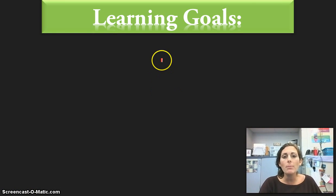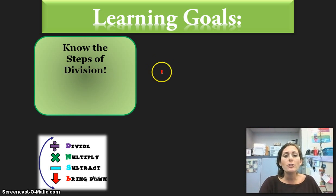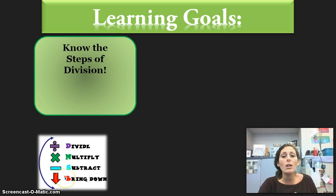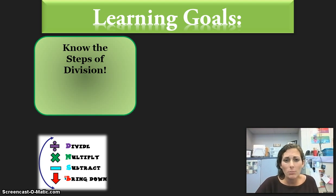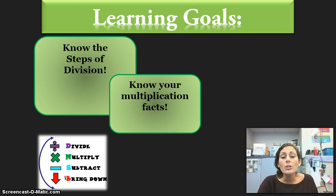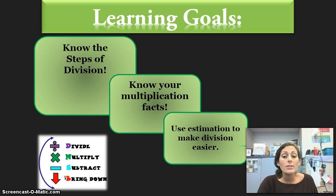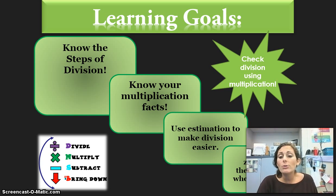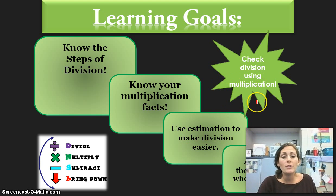At the top of your math journal, write 'learning goals' and underline it. The first learning goal is that you need to know the steps of the division process: divide, multiply, subtract, and bring down. I always use 'dad, mom, sister, brother,' and some of you may use 'Does McDonald's sell Big Macs.' You also need to know your multiplication facts, use estimation to make division easier, and use zeros in the quotient when needed. At any time, you can check your division using multiplication.